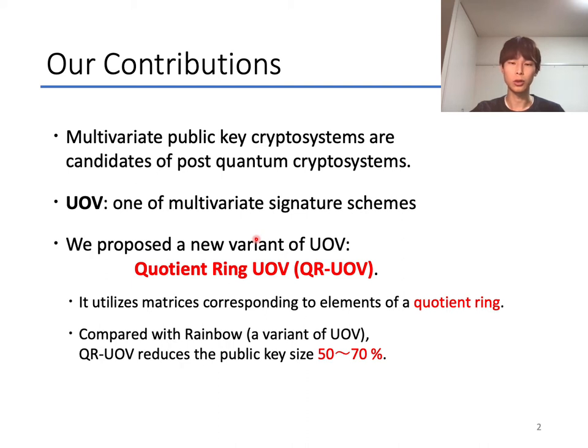First, I'll show the contribution of this research. Multivariate public key cryptosystems are candidates of post-quantum cryptosystems, and UOV is one of such multivariate signature schemes. In this research, we proposed a new variant of UOV, Quotient Ring UOV, which utilizes matrices corresponding to elements of a quotient ring. Compared with Rainbow variant of UOV, QR-UOV reduces public key size from 50% to 70%.